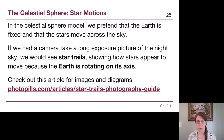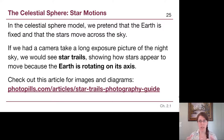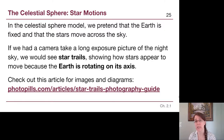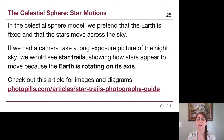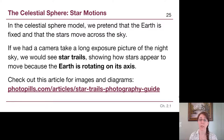In the celestial sphere model, it is really important to understand something key: we are pretending the Earth is stationary and that all of the stars rotate through our sky over the course of 24 hours. If we had a camera take a long exposure picture, we would actually see these motions. The key astronomy point is that the only reason the stars move and the sun rises and sets each day is because the Earth is rotating on its axis.